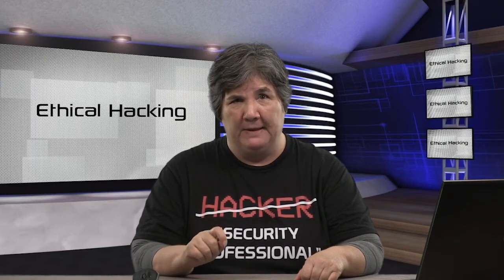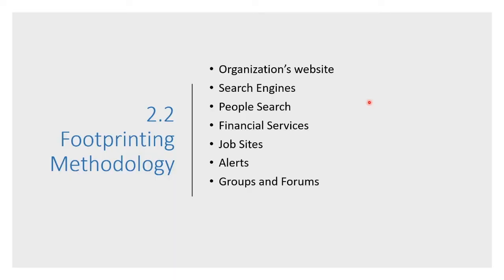Now let's talk about the methodology for footprinting. Remember, we are passively gathering information. We call it open source intelligence gathering, or OSINT. We're going to look at the organization's website and search engines, do people searches, look at financial service information, job sites and alerts, and groups and forums.